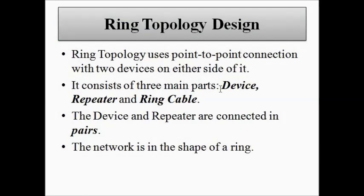The ring topology uses the point-to-point connection method. Now, there are three main parts of the ring topology. First is the device or the node, which can either be a computer, laptop, desktop, or a smartphone, or any peripheral device such as a printer or scanner. Then it consists of a repeater, which is attached with the device. And it also consists of the ring cable, which behaves as the communication link.